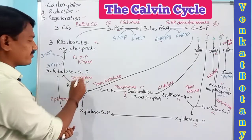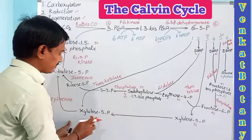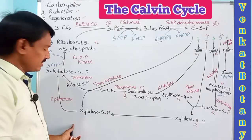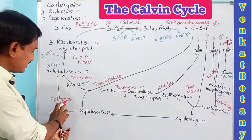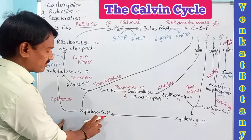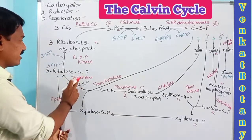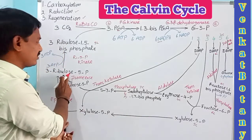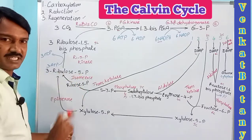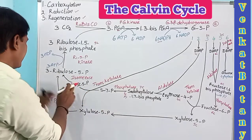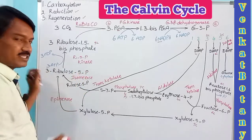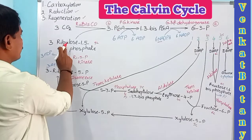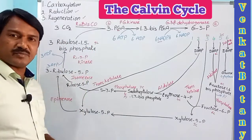The two xylulose 5-phosphate molecules are converted into two ribulose 5-phosphate molecules in the presence of the enzyme epimerase. So in total, three ribulose 5-phosphate molecules are present. These three molecules of ribulose 5-phosphate undergo phosphorylation using three ATP molecules to form three molecules of ribulose 1,5-bisphosphate (RuBP). This reaction is catalyzed by the enzyme ribulose 5-phosphate kinase.